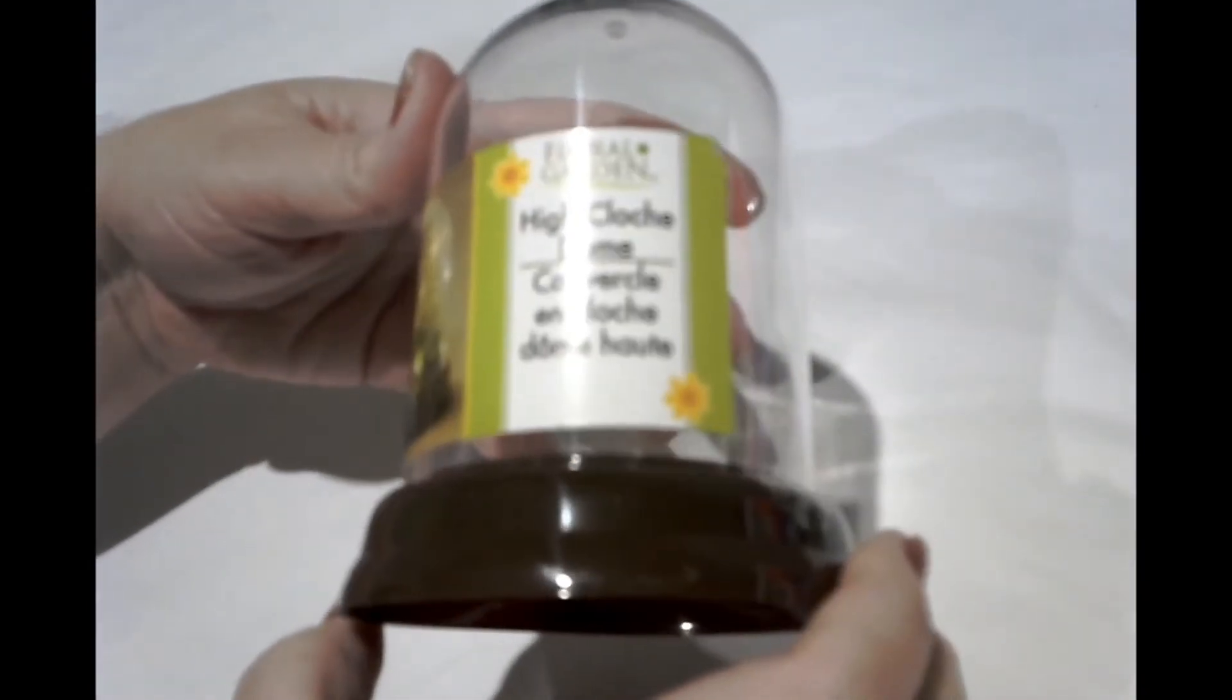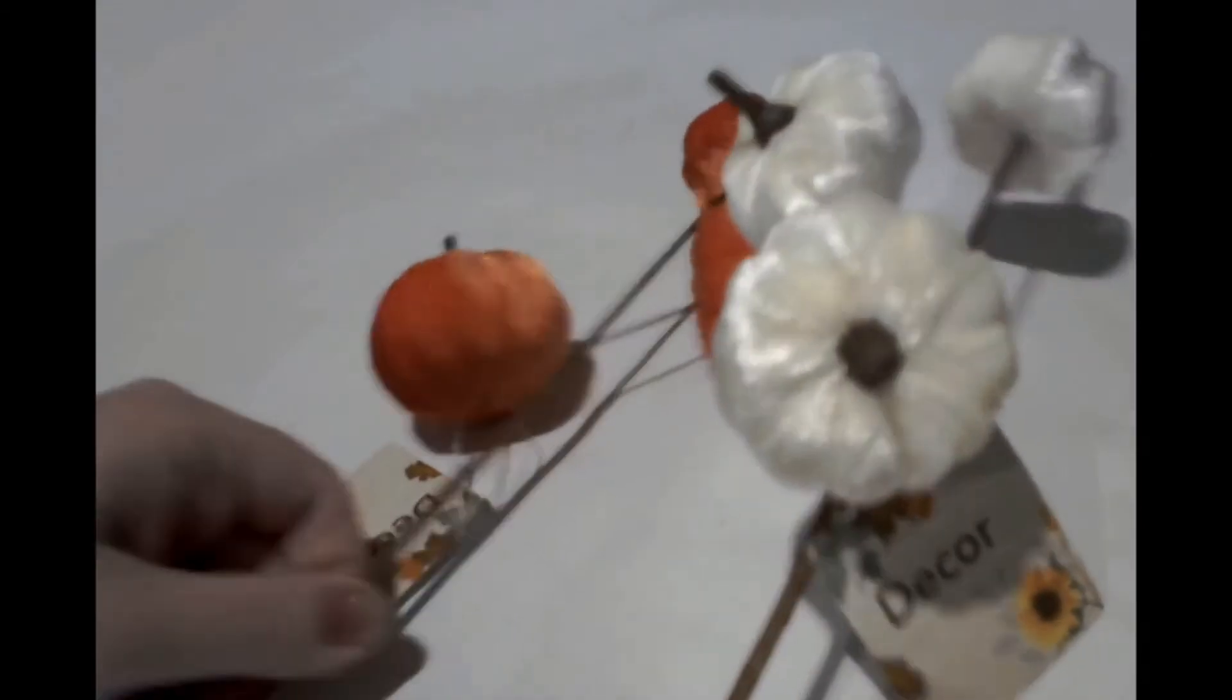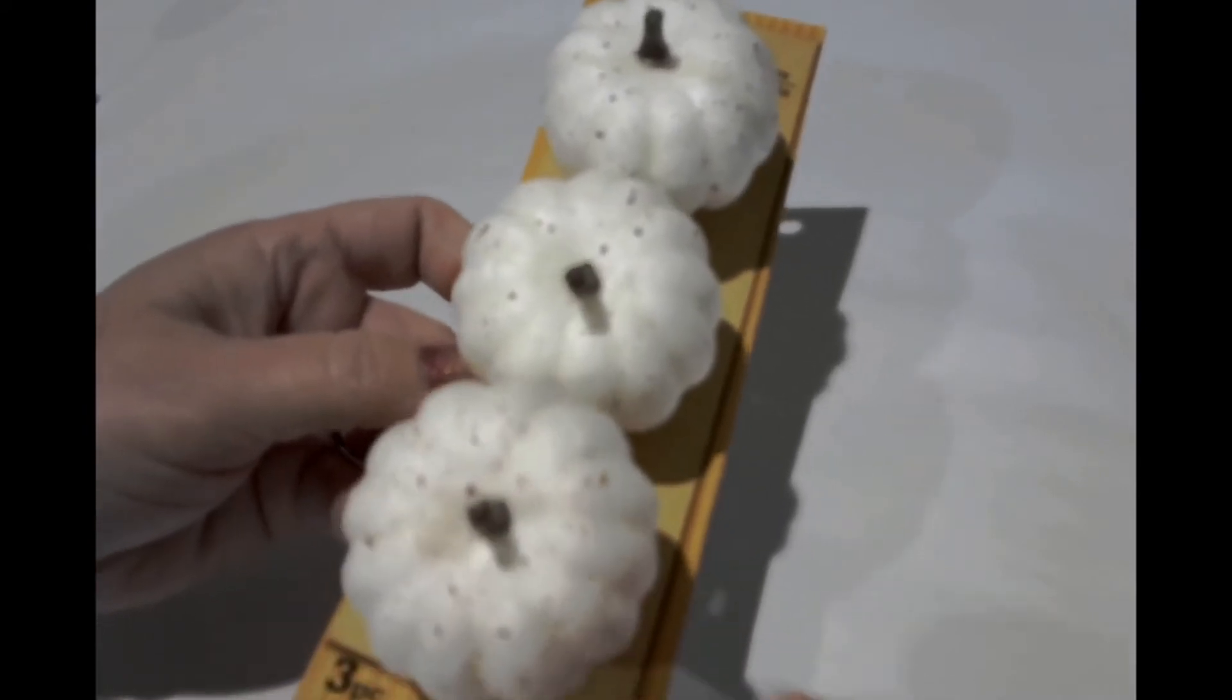So for the first craft, you'll need one of these high cloche domes that you can get from the Dollar Tree, pumpkin picks of your choice. If you can't find the velvet ones from the Dollar Tree, you can also use these picks, seen here.